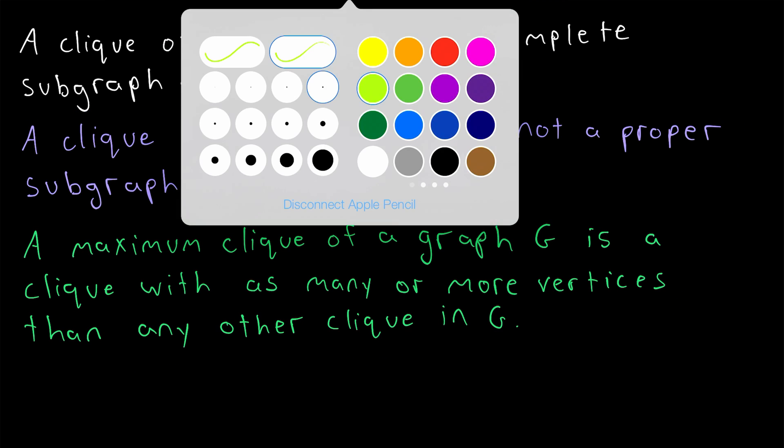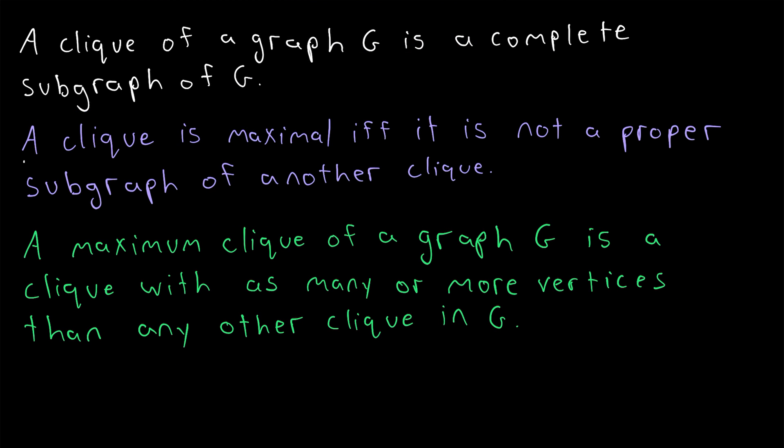Here are the definitions we're talking about. First, here in purple, we've got the definition of a maximal clique. A clique is maximal if and only if it is not a proper subgraph of another clique. So this means a clique is maximal when it cannot be extended by including another vertex.